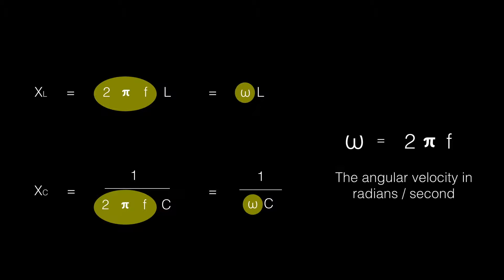So omega equals 2 pi f, and it's the angular velocity in radians per second. This will be a bit confusing to some, so we'll go through the explanation.